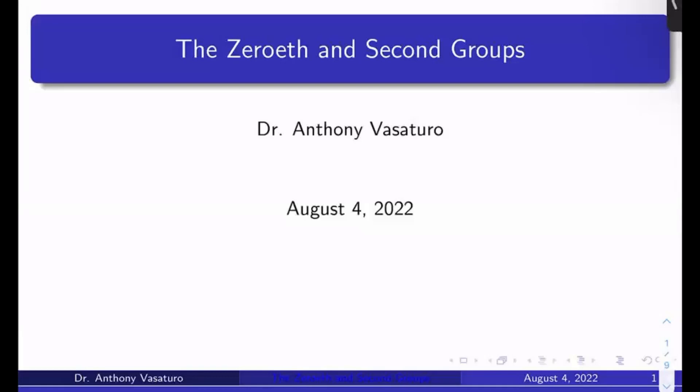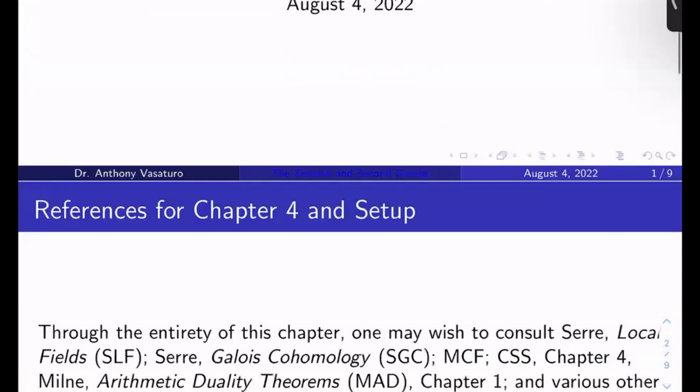So we're going to start Chapter 4 of my notes, which is on Galois cohomology groups. Today we're just going to look at the zeroth and second groups. So first of all, references.